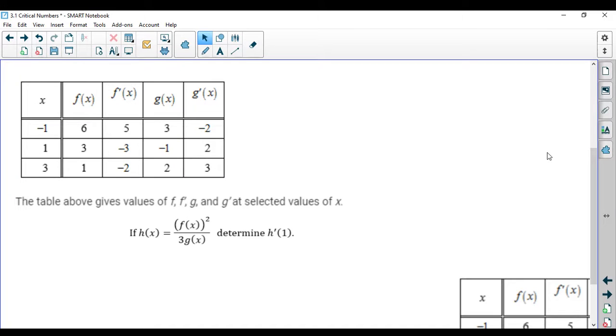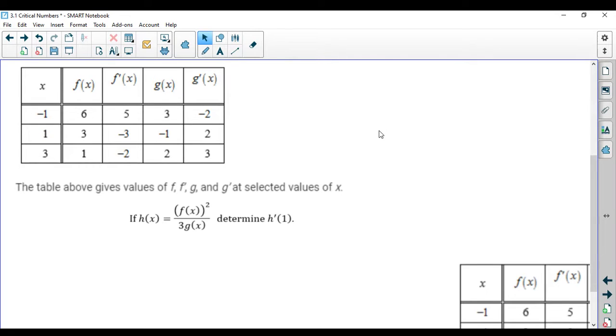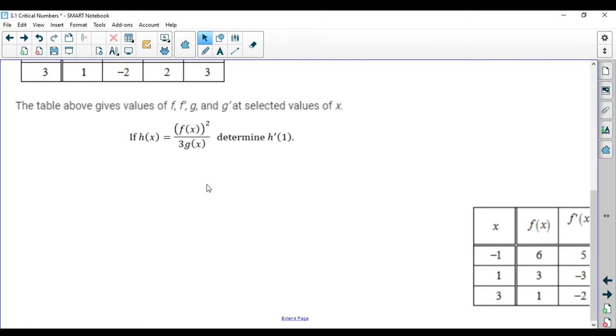One more example for determining a derivative just given the table of values. So we're going with the same table that we had last time, but now the function's a little bit more complicated. h of x is defined as a quotient, and also we have a chain rule going on up here.